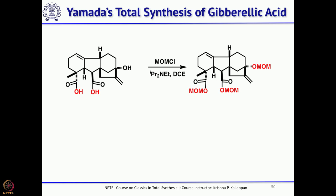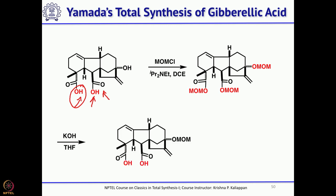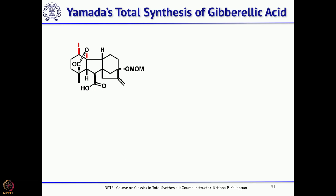Before iodolactonization, since you have two carboxylic acids, only the hydroxyl group of one carboxylic acid should undergo iodolactonization, so the other must be protected. Selective protection is difficult, so all three — the hydroxyl and both carboxylic acids — were protected as MOM ethers, then selectively hydrolyzed. You get back the dicarboxylic acid, then treat with iodine and sodium bicarbonate, and iodolactonization gives the iodolactone.